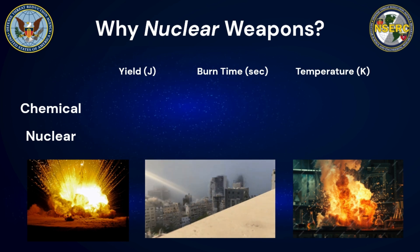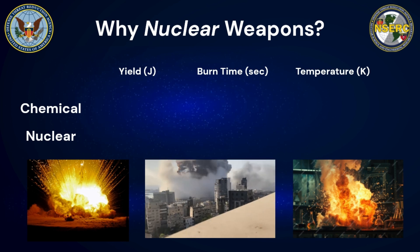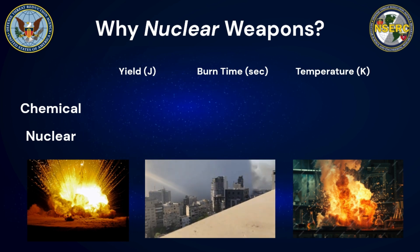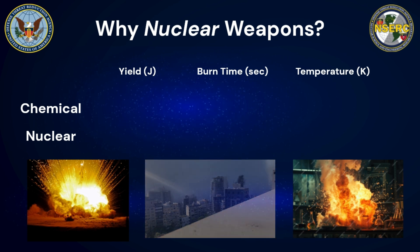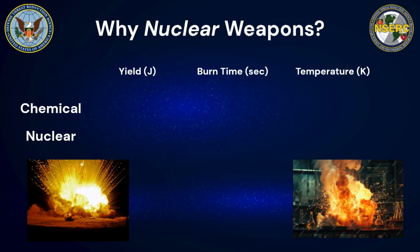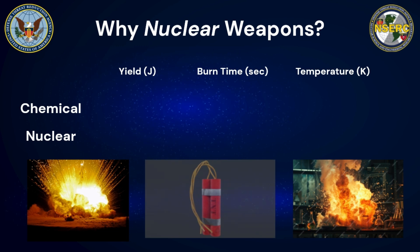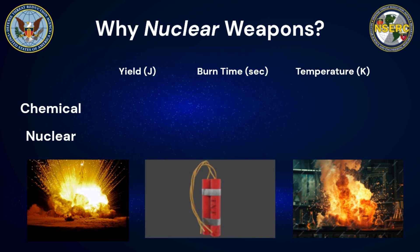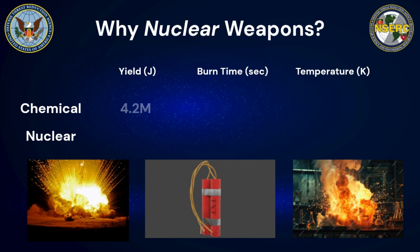Chemical explosions can create tremendous destruction depending on the amount of explosive fuel. In terms of our comparison criteria, if we consider only one kilogram — approximately 2.2 pounds — of tri-nitrotoluene, or TNT, the energy yield is around 4.2 million joules.